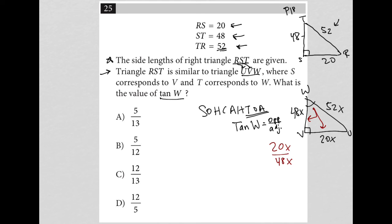Again, this is why the X's don't matter, because they're going to cross out whenever we do a ratio. If I were to reduce this 20 over 48, I could say, well, 4 goes into 20 five times, and 4 goes into 48 twelve times.